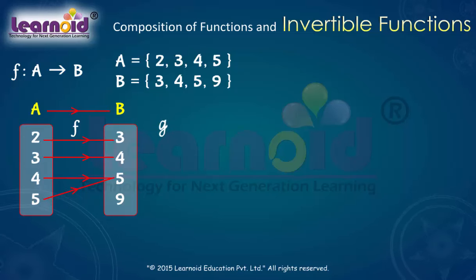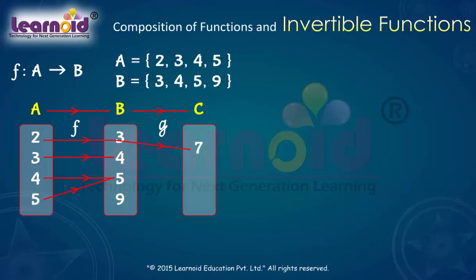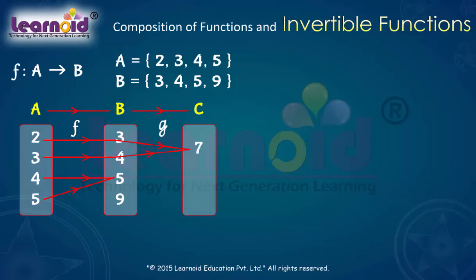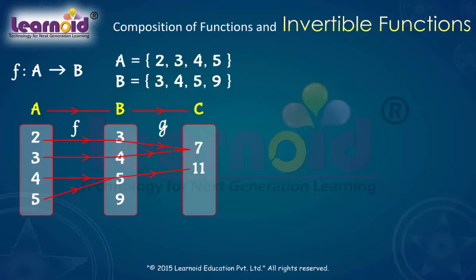And g is a function from B to C such that g(3) = 7, g(4) = 7, g(5) = 11, and g(9) = 11.